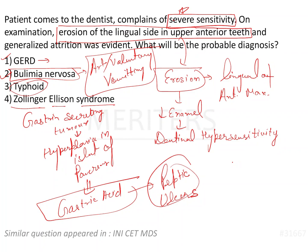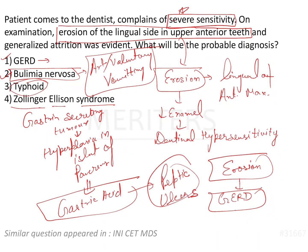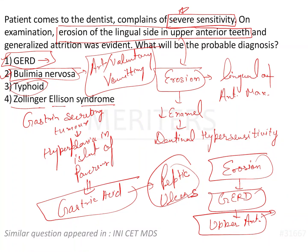We know that erosion of the teeth generally occurs due to GERD, because there is reflux of acid into the oral cavity. That acid comes into direct contact with the upper anterior teeth and causes demineralization. Since demineralization occurs, there will be loss of enamel and dentinal hypersensitivity. So the diagnosis here is going to be GERD — the first option.